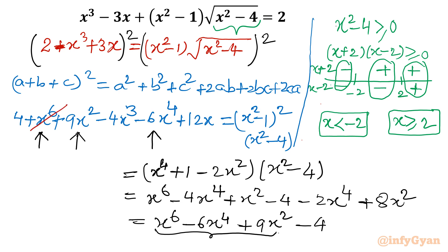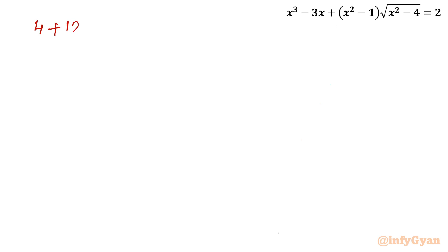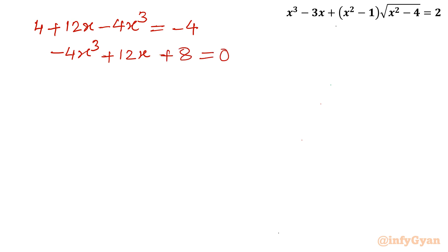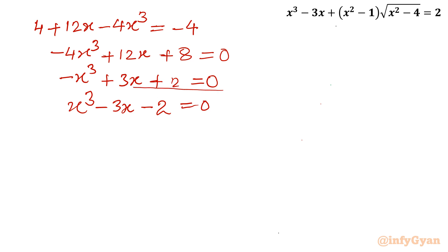Now just check what is left. On the left-hand side we have 4 - 4x³ + 12x, and on the right-hand side we have -4. This is now a proper cubic equation. So: 4 + 12x - 4x³ = -4. Taking all terms to the left: -4x³ + 12x + 8 = 0. Dividing by 4: -x³ + 3x + 2 = 0. Multiplying by -1: x³ - 3x - 2 = 0.